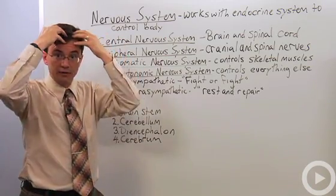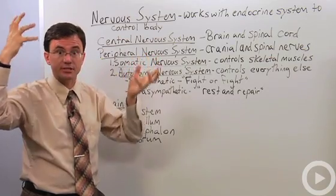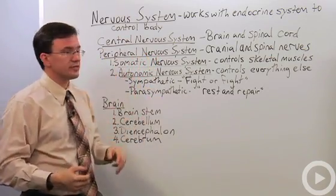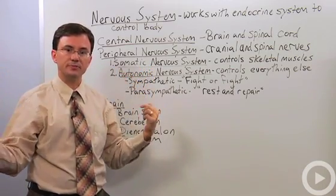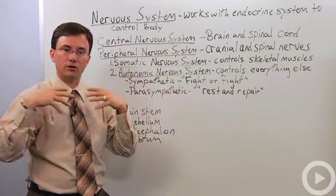The central nervous system is the brain and spinal cord, the stuff in the middle, whereas the peripheral nervous system is all the nerves coming off the brain, called cranial nerves, and all the nerves coming off the spinal cord, called the spinal nerves.